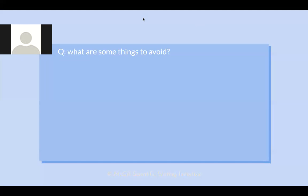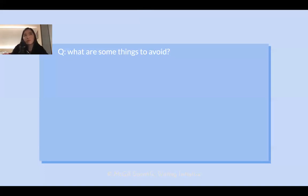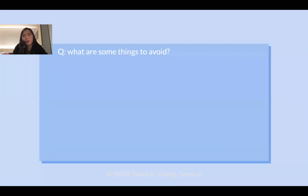Question: Should you avoid including experiences from high school? Typically, once you start university, remove high school content. For a grad school application, I wouldn't include anything from high school — it can seem like you ran out of things to say. Unless it's super significant — which usually isn't the case — generally just avoid it. I don't even put my high school on my CV now.